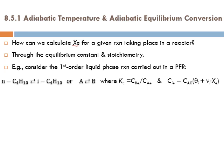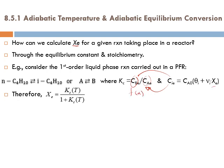Substituting for these concentrations using the stoichiometric expressions and solving for X — because here we have Kc as a function of X — since we're dealing with equilibrium conversion, this gives us an expression for Xe.